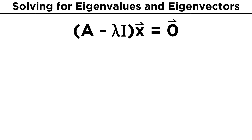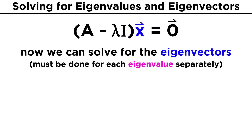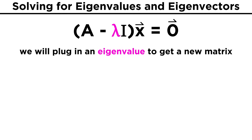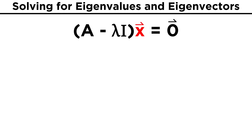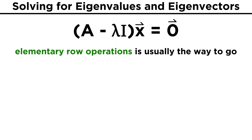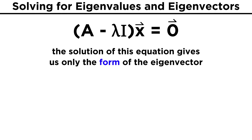Once we have found the eigenvalues for a matrix, we can start solving for the eigenvectors. This takes a bit more effort, and it must be done for each eigenvalue separately. We will once again examine the matrix A minus lambda I times X equals the zero vector. This time we will plug in one of the eigenvalues for lambda and get a new matrix. The most consistent method is to use row operations to get the matrix into row echelon form. There will be times when we must choose values for the components of the eigenvectors, but the solution only represents the form of eigenvectors.